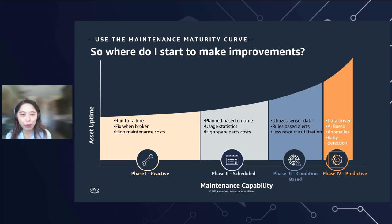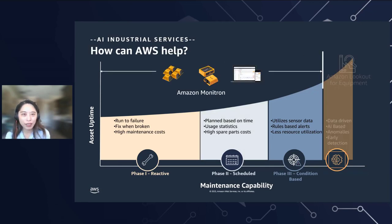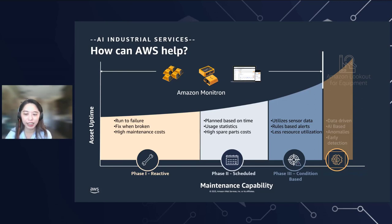Finally, to enable a predictive maintenance program, additional historical and system data combined with machine learning algorithms can be utilized to analyze and make predictions of your machine status. With such complex data sets, you are able to utilize multivariate machine learning algorithms to provide actionable early warnings and alerts to your maintenance team. Now let us overlay the industrial AI services from AWS with this maintenance maturity curve. Let's first discuss how Amazon Monitron can help improve your organization's maintenance program from phase one and phase two — scheduled maintenance — to phase three, condition-based monitoring.